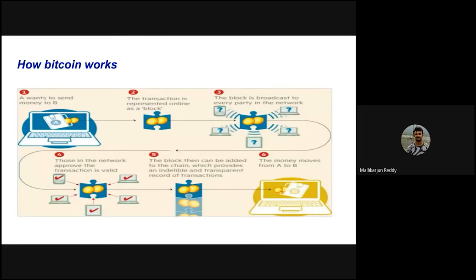Let me explain Bitcoin using an analogy to existing payment networks. In a UPI transaction, you create a transaction that goes to your payer PSP, which forwards it to NPCI (National Payments Corporation of India). Settlement happens at NPCI, which then informs both the payer PSP and payee PSP, who in turn inform the payer and receiver. This is how existing banking systems work — through centralized intermediaries.